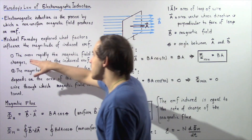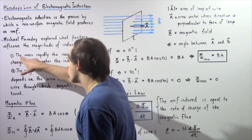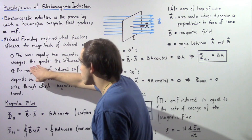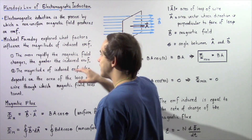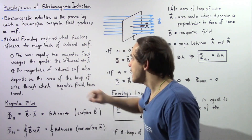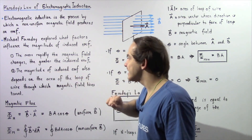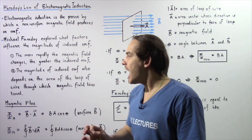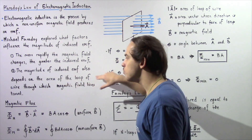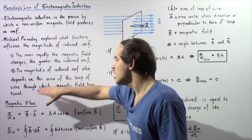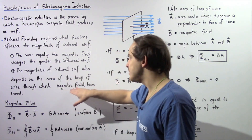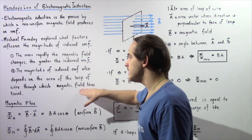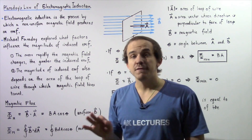Faraday was able to show that the more rapidly the magnetic field changes, the greater the induced EMF. He was also able to show that the magnitude of the induced EMF depends on the area of the loop of wire through which that changing magnetic field — through which the magnetic field lines — travel.